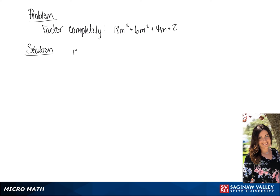We are going to factor 12m cubed plus 6m squared plus 4m plus 2. The first thing we're going to do is pull a 2 out of this, giving us 2 times 6m cubed plus 3m squared plus 2m plus 1.